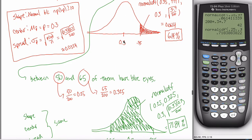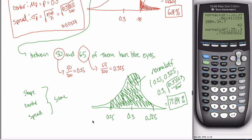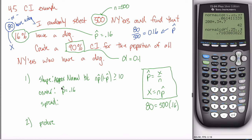Spread: We used to have the formula — the square root of p × (1−p) / n. Best case scenario, for confidence intervals it's identical except with p-hats. And it is: the spread is the square root of p-hat × (1−p-hat) / n. That's the square root of 0.16 × 0.84 / 500. Everything stays the same from the previous video — you just change all the p's into p-hats.